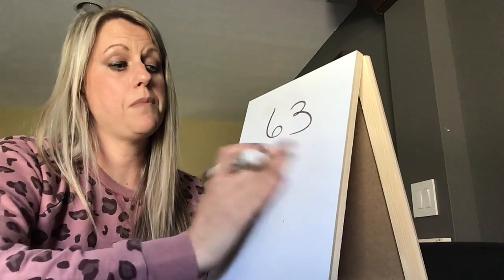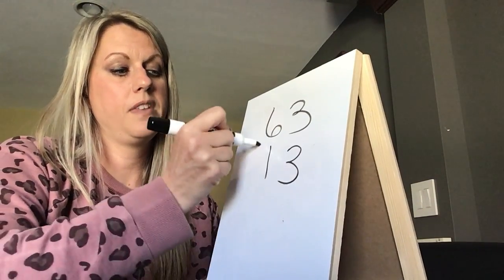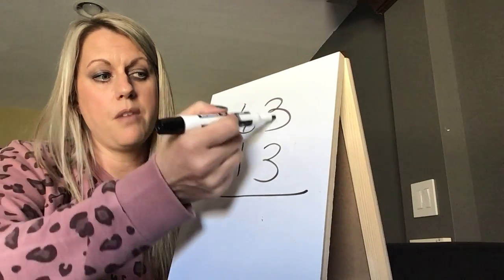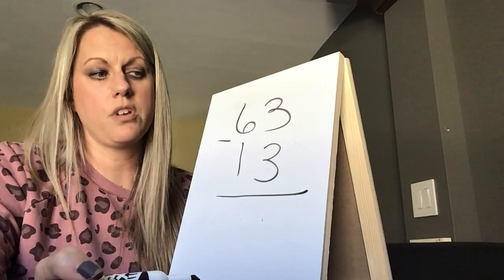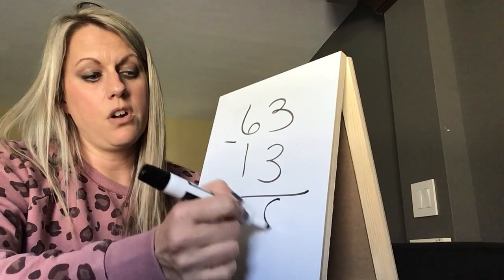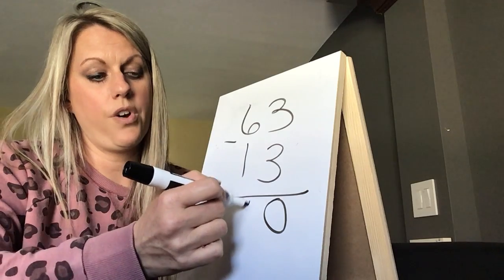Now, sometimes we talk about numbers that are the same. So let's say we have 63 and we subtract 13. The two numbers are the same, and we always say when the numbers are the same, zero is the game. So three take away three, we already know is zero. And six take away one is five.